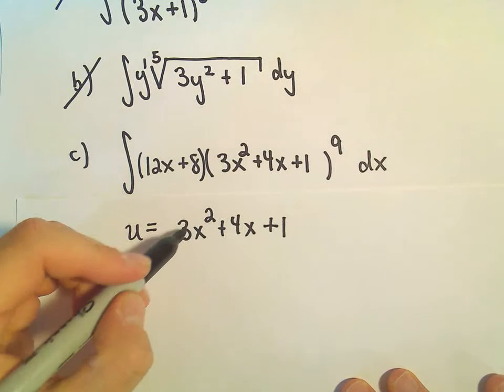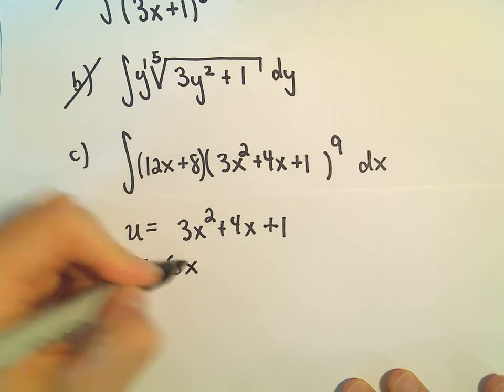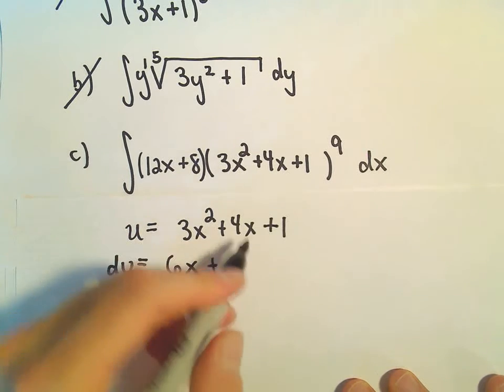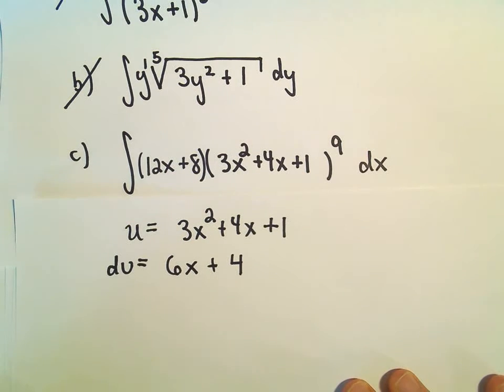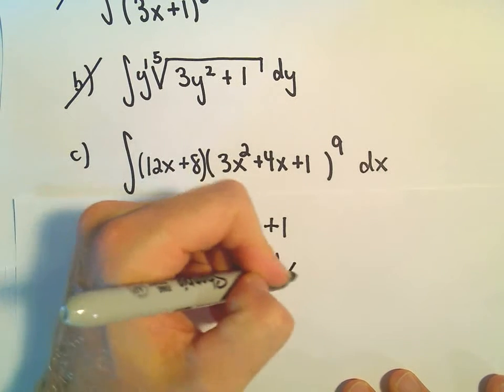Our du, well, the derivative of 3x squared, we would do 3 times 2, which would give us 6x to the first, and then our positive 4x, the derivative of that, will just turn into positive 4, and then we still have our dx left over.